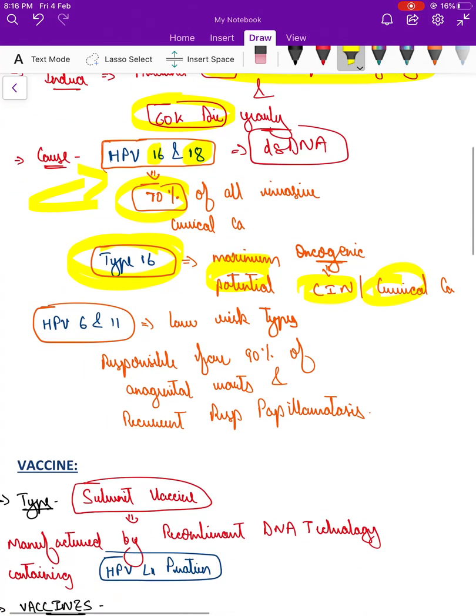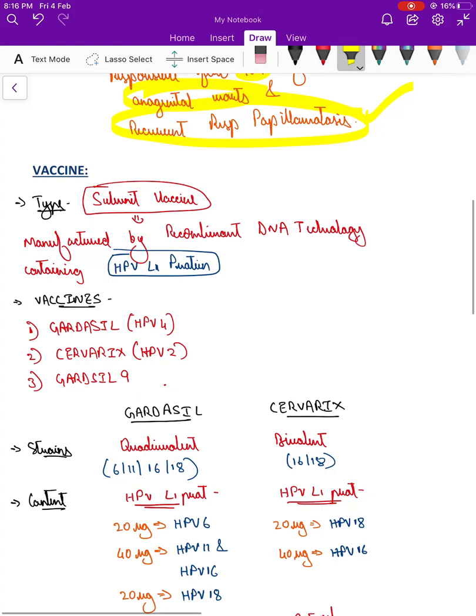HPV 6 and 11 are lower risk types. They are responsible for 90 percent of anogenital warts and recurrent respiratory papillomatosis, and this is quite a difficult condition to treat as well.